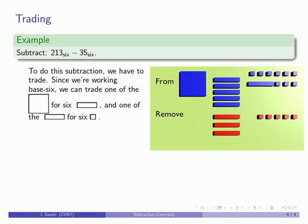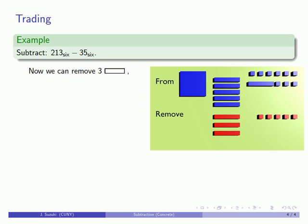And what that gives us is enough medium and enough small to be able to remove 3 medium and 5 small. So I'll remove 3 medium. I'll remove 5 small.